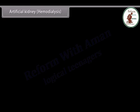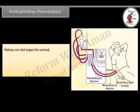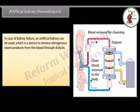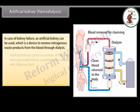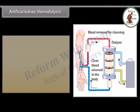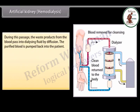Artificial kidney / haemodialysis: kidneys are vital organs for survival. Infections, injury, or restricted blood flow to the kidneys can reduce their activity, leading to accumulation of poisonous wastes in the body, which can even lead to death. In case of kidney failure, an artificial kidney can be used to remove nitrogenous waste products from the blood through dialysis. Artificial kidneys contain tubes with a semi-permeable lining suspended in a tank filled with dialyzing fluid, which has the same osmotic pressure as blood but is devoid of nitrogenous wastes. The patient's blood is passed through these tubes, and the waste products pass into the dialyzing fluid by diffusion.